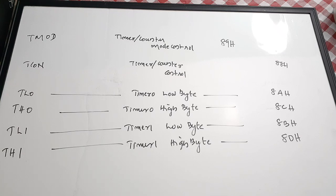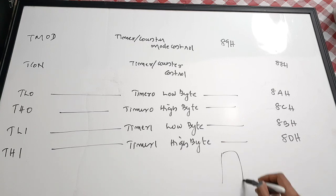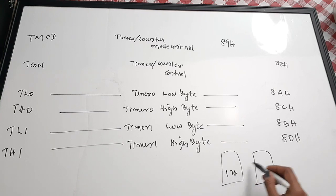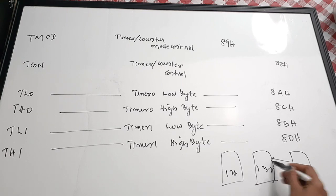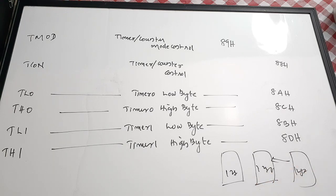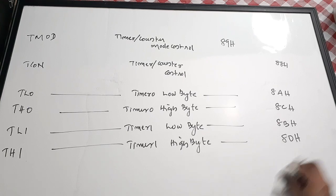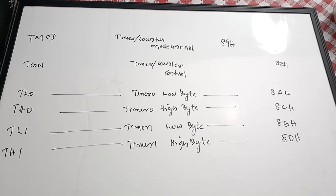We have now covered the internal RAM, ROM organization, and the special function registers with their addresses. In some variants of 8051, there can be an additional 128 bytes beyond the standard lower and upper 128 bytes, to supplement the special function register space if needed. You can also connect external ROM and external RAM to the 8051 — up to 64 kilobytes of RAM and 64 kilobytes of ROM — to meet memory requirements.